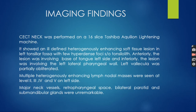Imaging findings: Contrast CT neck was performed on a 16-slice machine. It showed an ill-defined heterogeneously enhancing soft tissue lesion in the left tonsillar fossa with few hyperdense foci of tonsillolith density. Anteriorly, the lesion was involving the base of tongue on the left side, and inferiorly, the lesion was involving the left lateral pharyngeal wall. Left peritonsil was partially obliterated. Multiple heterogeneously enhancing lymph nodal masses were seen at levels 2, 3, 4 and 5 on the left side. Major neck vessels, retropharyngeal space, bilateral parotid and submandibular glands were unremarkable.